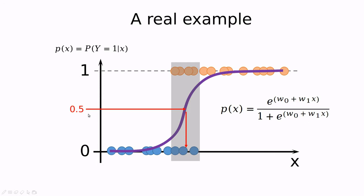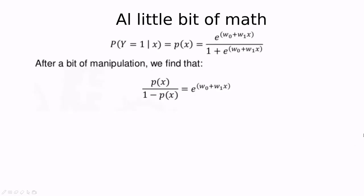What happens in the middle? If the exponential term is zero, then exp(0) equals one, one divided by two gives one half. This is the inflection point of the formula. We can use this as a criterion, but changing this level is going to change the prediction, and this ties back to the ROC curve. We'll understand that later.